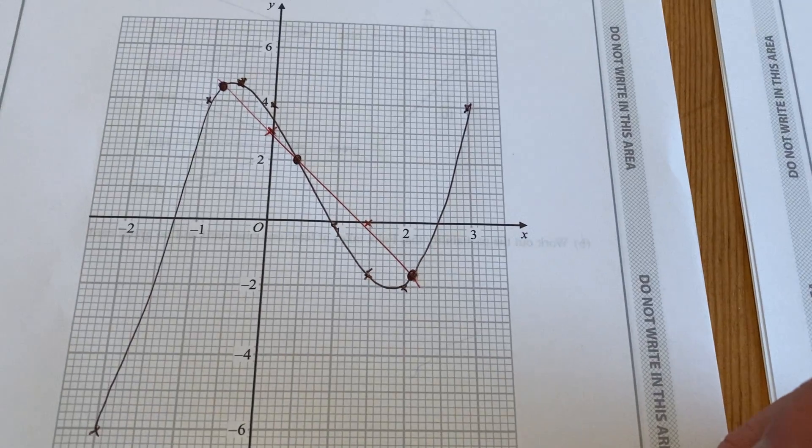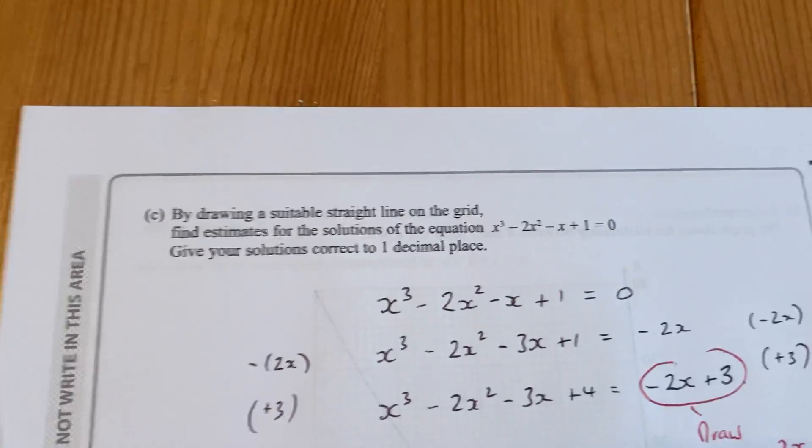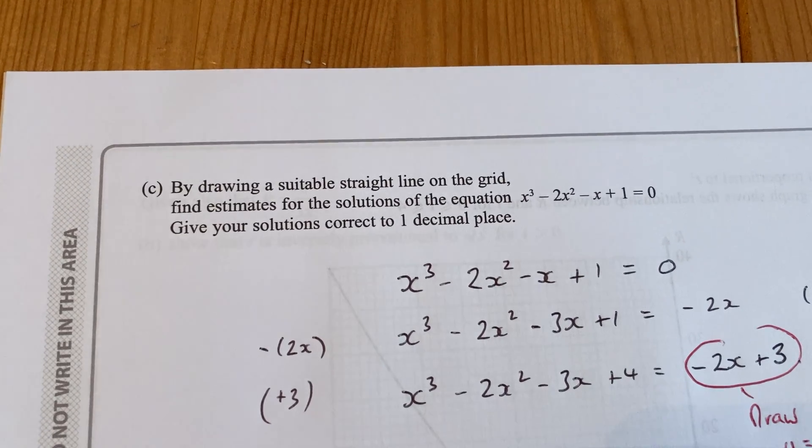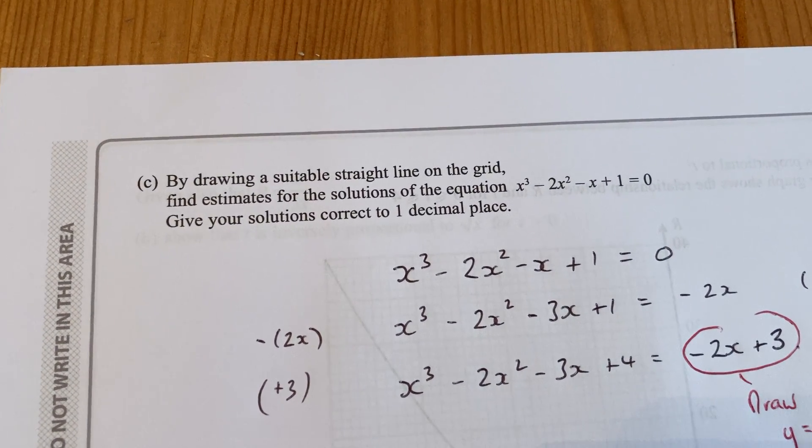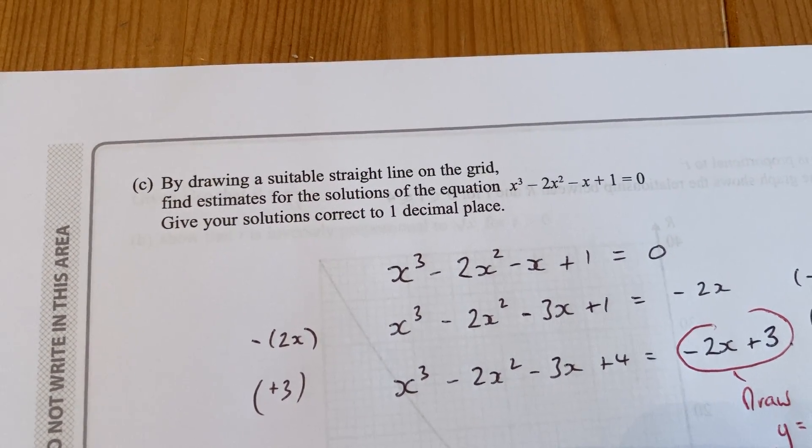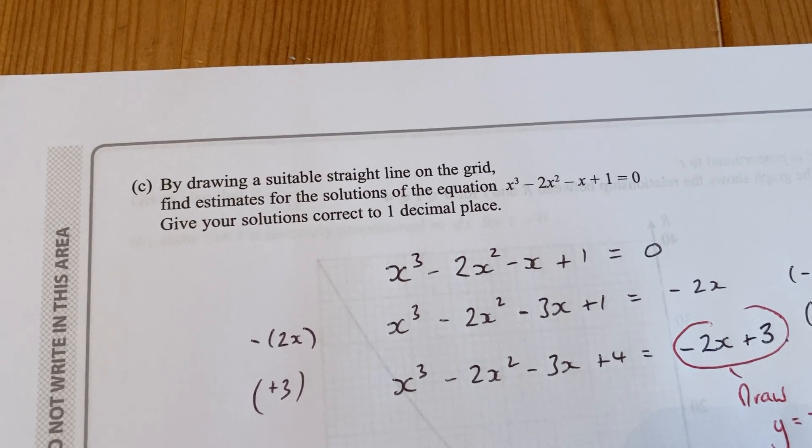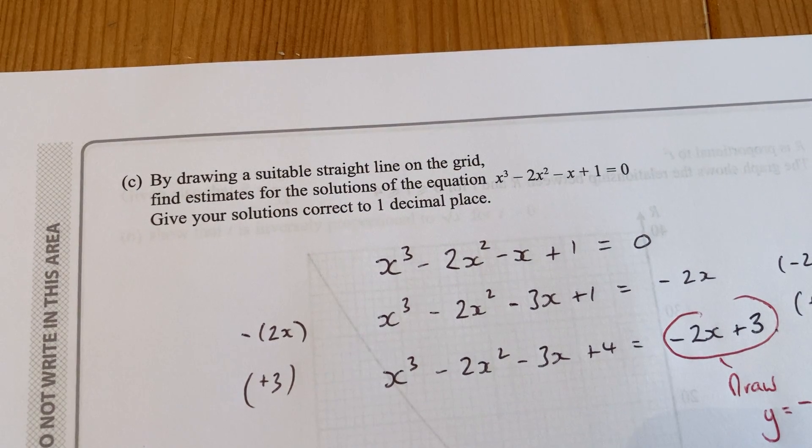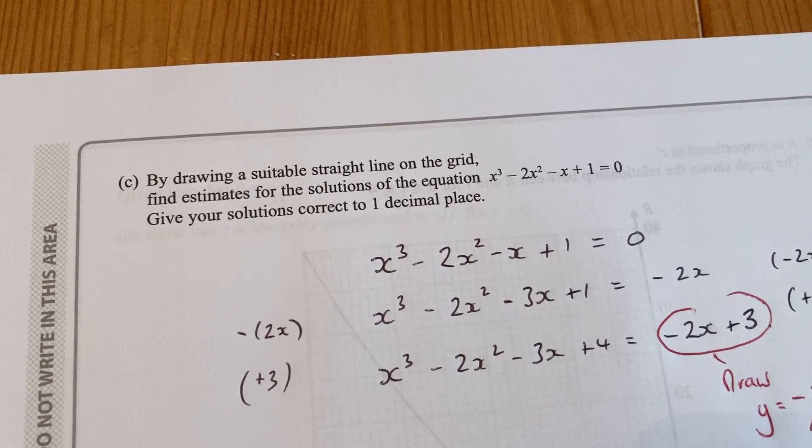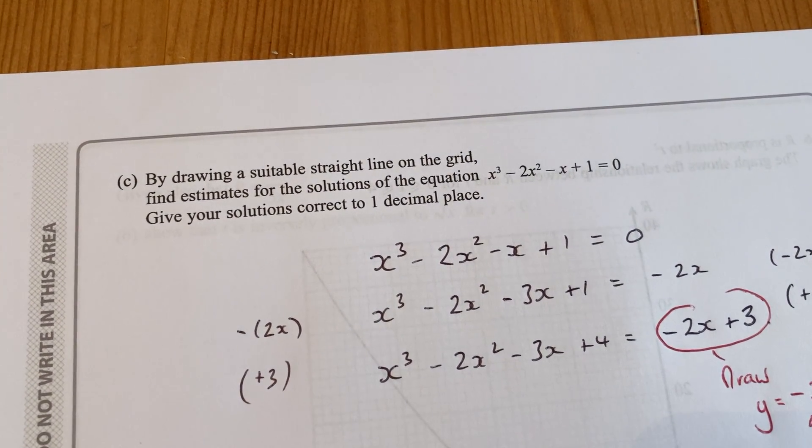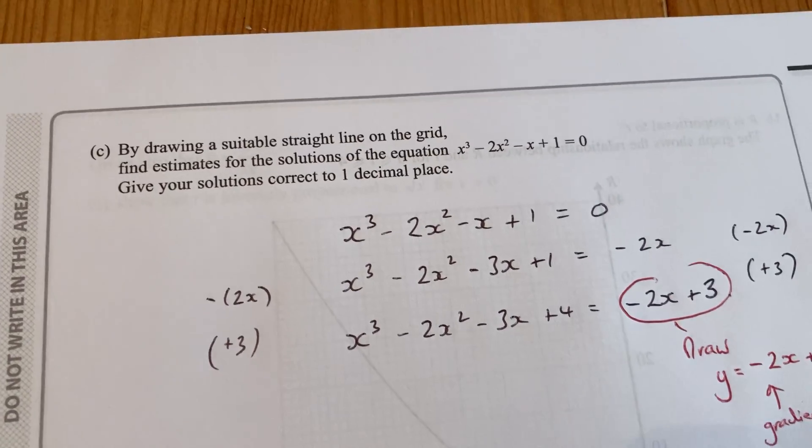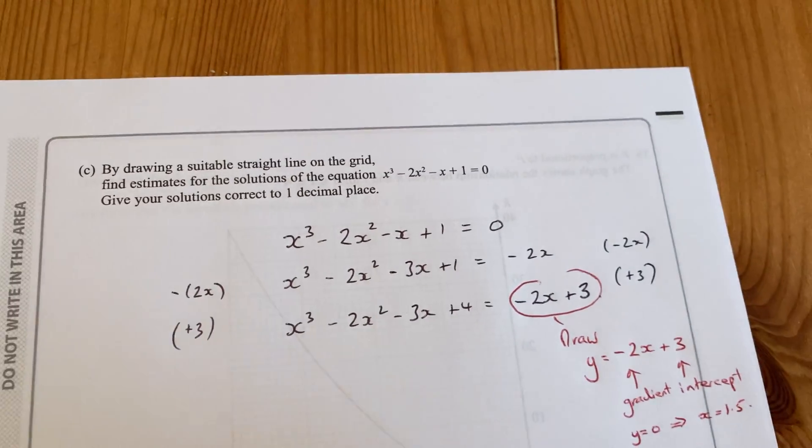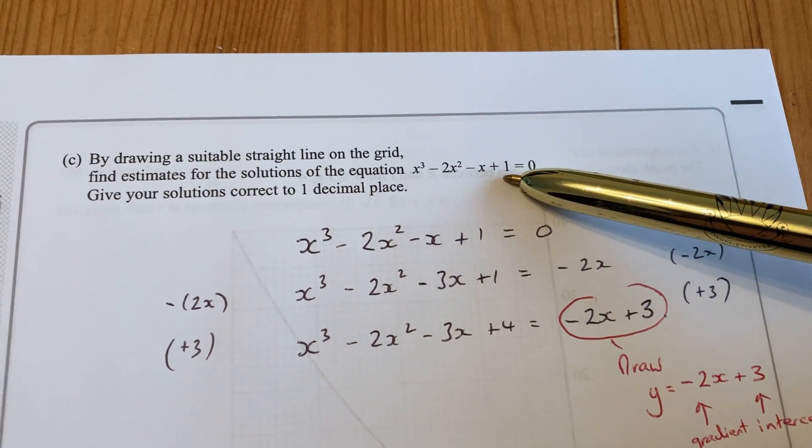That's part B. Part C is this one: solve the equation x³ - 2x² - x + 1 = 0 using the graph. Now the graph we've got isn't that equation—it's something slightly different. So I'm going to change that equation so it includes the one we've just drawn. To make this left-hand side have -3x and +4, I need to take away 2x from both sides, which will create the -3x.